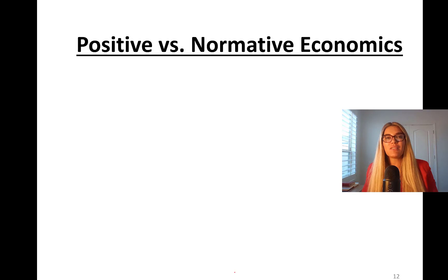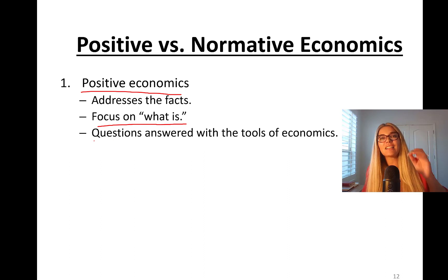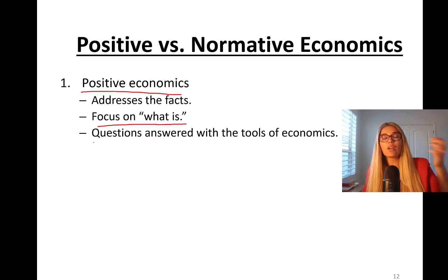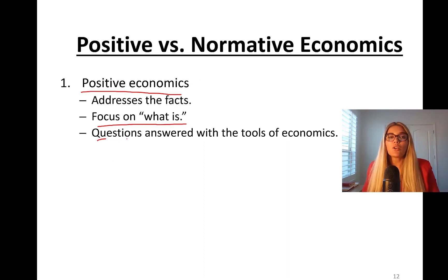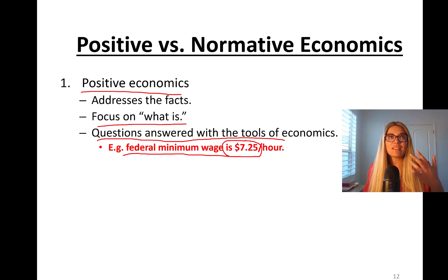Now let's learn about positive versus normative economics. Positive economics addresses facts — it focuses on what is. For example, you can state an economic fact like: the unemployment rate was 3.4% three months ago. If it's a fact, it is a positive economic statement. Questions answered with the tools of economics and labor economics — for instance, the federal minimum wage is $7.25 per hour, that's a fact. Or the minimum wage rate is $15.50 in California at the moment — that's a fact. That's positive economics.